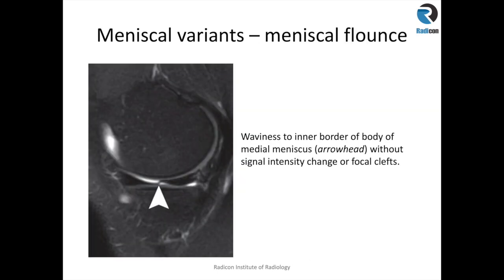Another meniscus variant is meniscus fluens. There is a hypothesis that this is a result of previous trauma. This is not a tear and no intervention is required as long as you know what it looks like. What you get is a waviness of usually the inner free margin of the meniscus body. If you can describe and label it as meniscus fluens, then in conclusion you can say there is no tear. It is an important variant to recognize and dismiss.